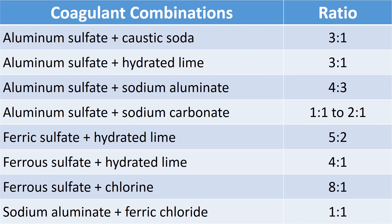This chart shows the different combinations of chemicals that can be used with coagulants to make the coagulation process more effective. Aluminum sulfate combined with caustic soda at a 3:1 ratio is a common combination. Also: aluminum sulfate with hydrated lime at 3:1; aluminum sulfate and sodium aluminate at 4:3; aluminum sulfate with sodium carbonate at ratios ranging from 1:1 up to 2:1; ferric sulfate and hydrated lime at 5:2; ferrous sulfate and hydrated lime at 4:1; ferrous sulfate with chlorine at 8:1; and sodium aluminate with ferric chloride at 1:1.